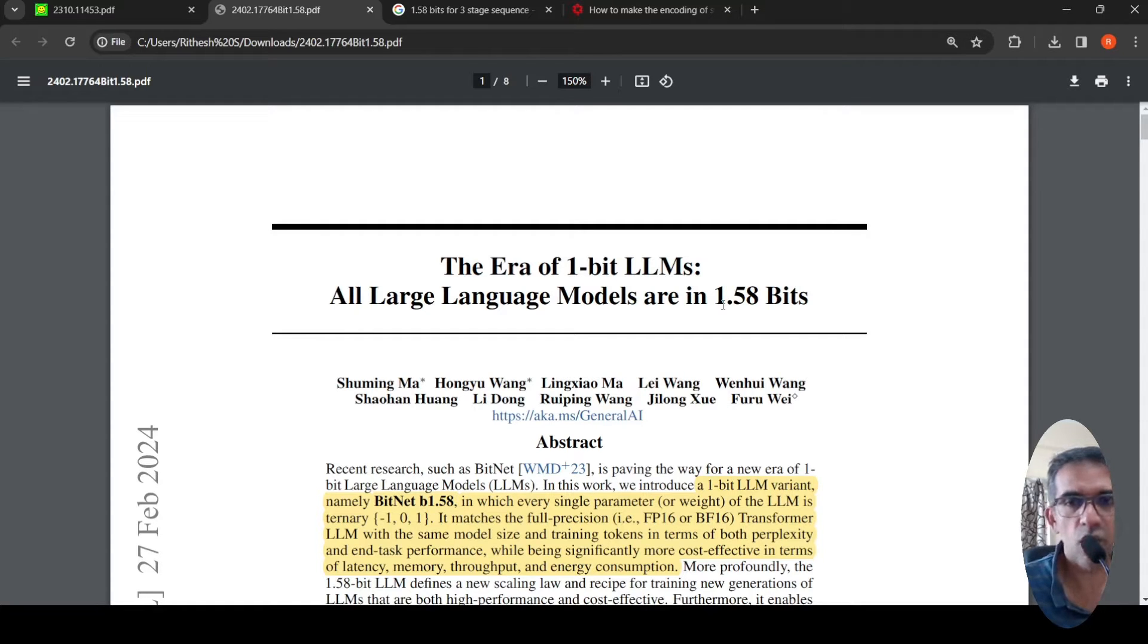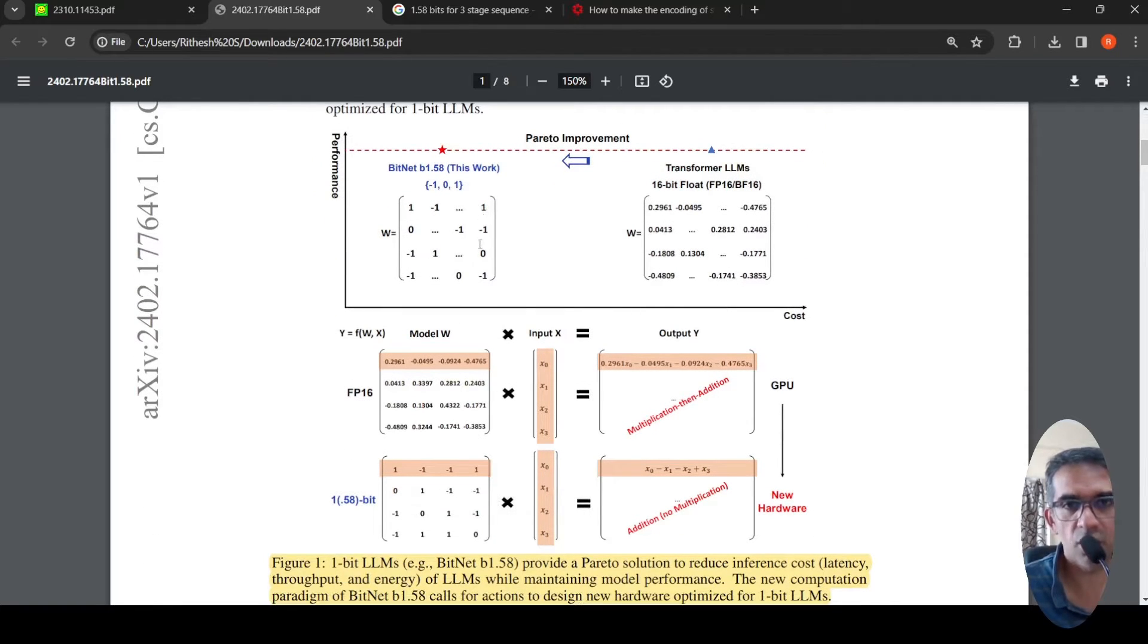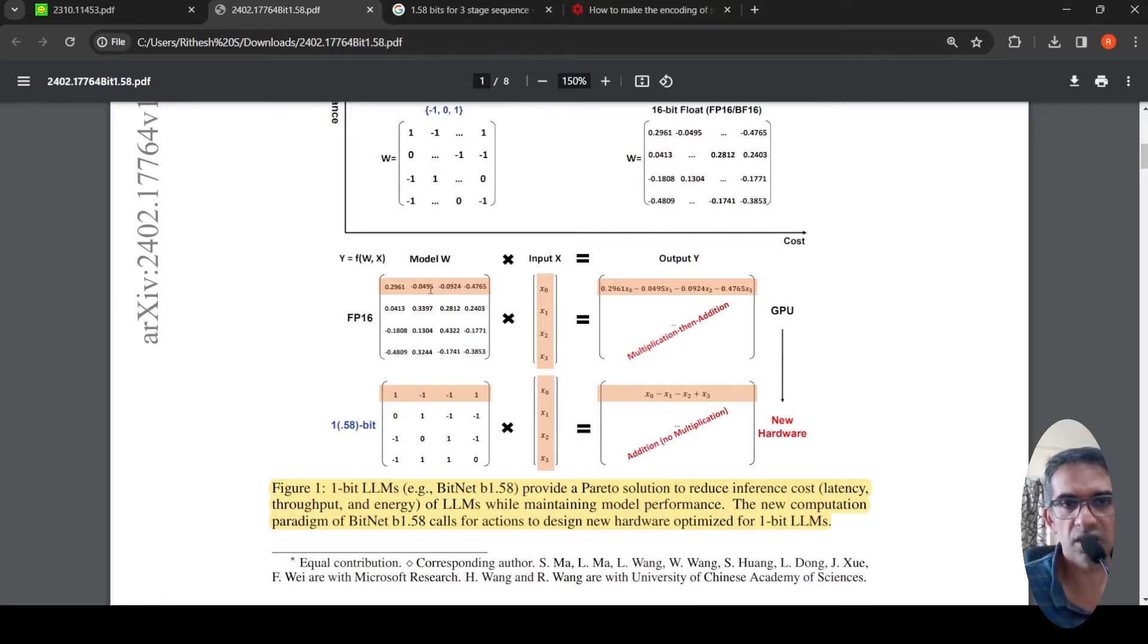So what is the idea over here? The idea is that if you take any neural network, you do this weights into input multiplication, because your weights are in floating-point precision values like 0.2961 and so on. So what happens is that you do this multiplication and then addition in your computation. So most of the computations are multiplications and then additions. What if you can convert these weights into just three values? 1, 0 and minus 1.